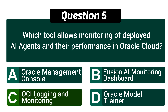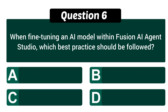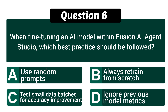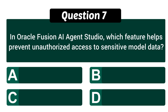Question five correct answer: C — OCI Logging and Monitoring. Question six: when fine-tuning an AI model within Fusion AI Agent Studio, which best practice should be followed? Correct answer: C — test small data batches for accuracy improvement.